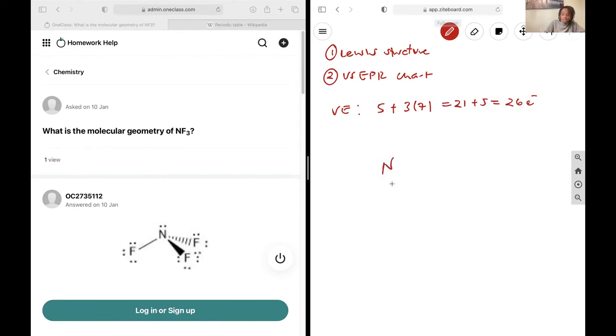I start with N as my central atom, it can make the most bonds, and attach 3 fluorines, and begin by filling in all of the octets.